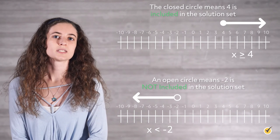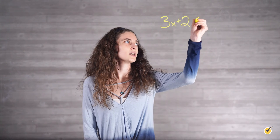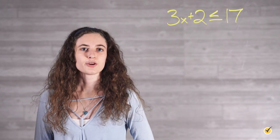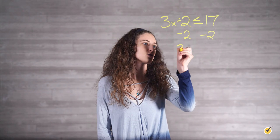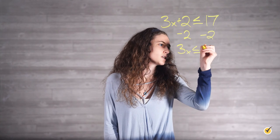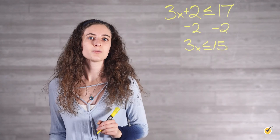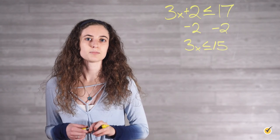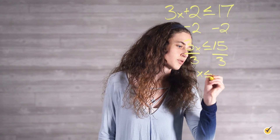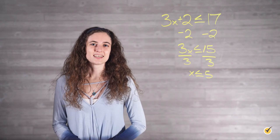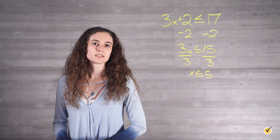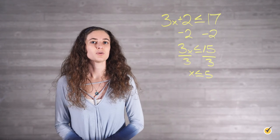Let's sort out this notation with a few examples of solving inequalities. 3x plus 2 is less than or equal to 17. The approach here will be the same as solving an equation, but the inequality symbol will be interpreted differently. The first step to isolate the variable term is to subtract 2 from both sides, which gives us 3x is less than or equal to 15. The second step is to determine the critical value of x by dividing both sides by 3, giving us x is less than or equal to 5. This result states that all values of x that are less than or equal to 5 will satisfy the original inequality.